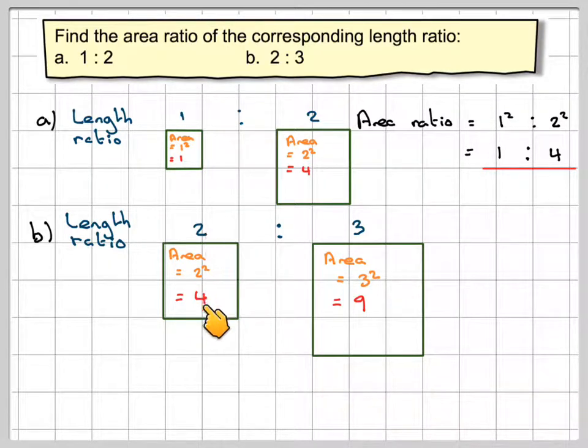You'll notice if you square 2 you get 4 and if you square 3 you get 9. So the area ratio is taking the length ratio and squaring each one. So it's 2 squared and 3 squared which gives me 4 to 9.